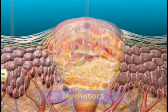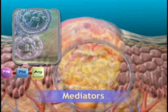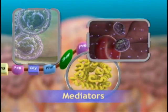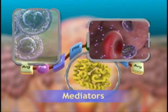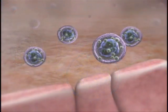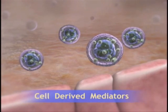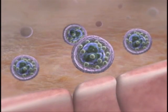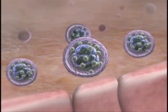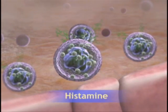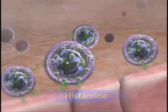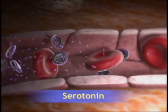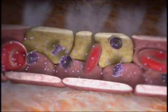Concurrent with the vascular and cellular stages, chemical mediators release bioactive agents that mediate the inflammatory response. Mediators are derived from cells or from plasma. One of the first mediators is the cell-derived mediator histamine, found in high concentrations in the mast cells of connective tissues adjacent to blood vessels, as well as in blood basophils and platelets. Histamine is released in response to a variety of stimuli and causes dilation and increased permeability of capillaries. Serotonin, another cell-derived mediator, performs similar actions.